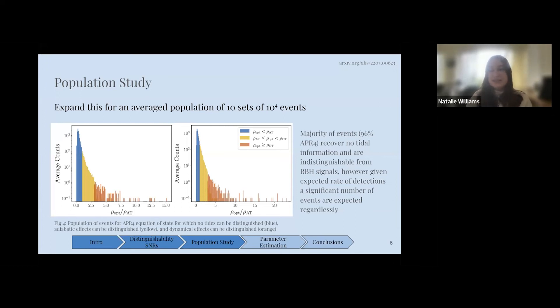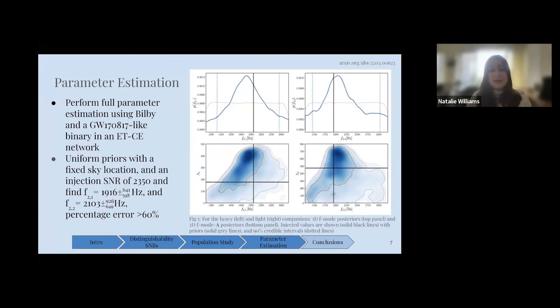The distinguishability criterion is a useful gauge to see what events might be able to measure these dynamic effects. However, it doesn't tell us anything about the accuracy to which we can measure dynamical tides. For the next part of our analysis, we do full Bayesian parameter estimation on one mock signal, a GW170817-like event. We put this in an Einstein Telescope Cosmic Explorer network, and we find our posteriors here.